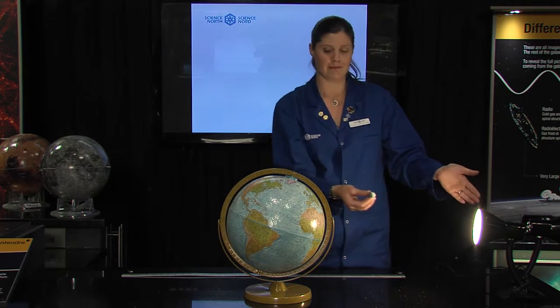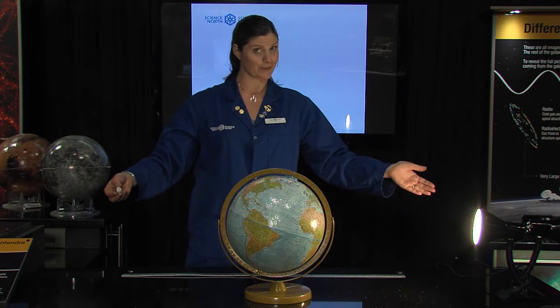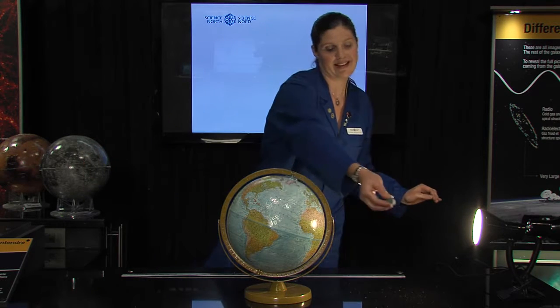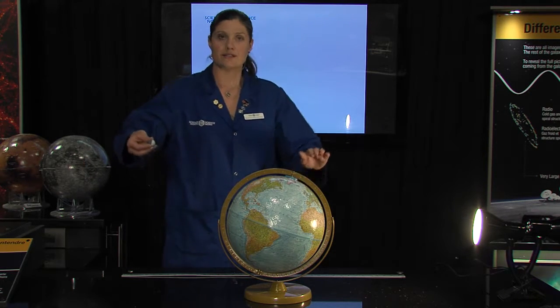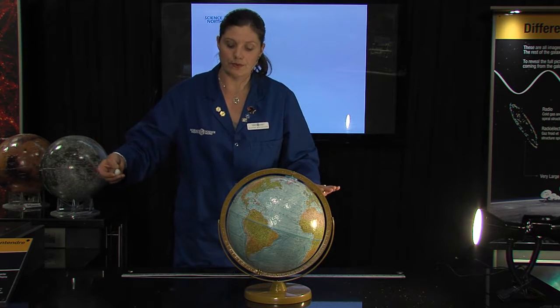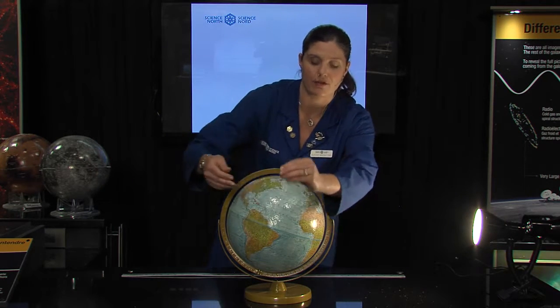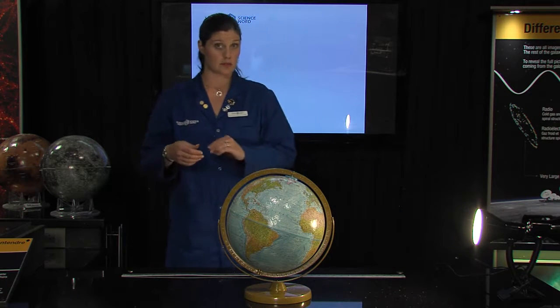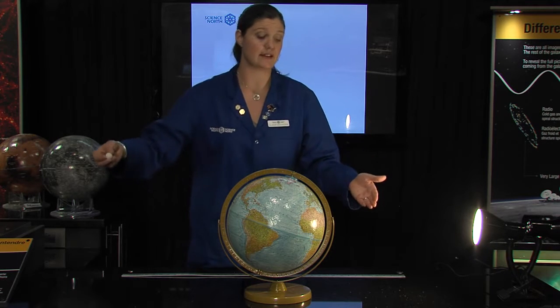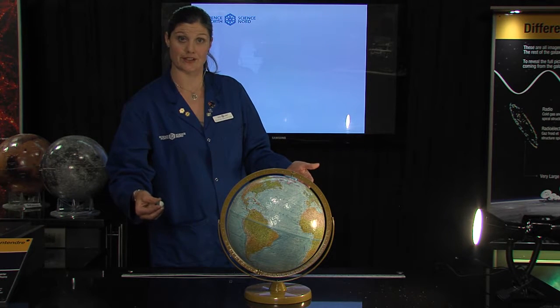So how come we don't have a solar eclipse every new Moon, and a lunar eclipse every full Moon? Well, that's because the orbit of the Moon is inclined to the plane that the Earth orbits around the Sun, which we call the ecliptic. So every time the Moon orbits around the Earth, it crosses the ecliptic twice. But we only get an eclipse if the Moon happens to be crossing the ecliptic during the new Moon, or crossing it during a full Moon.